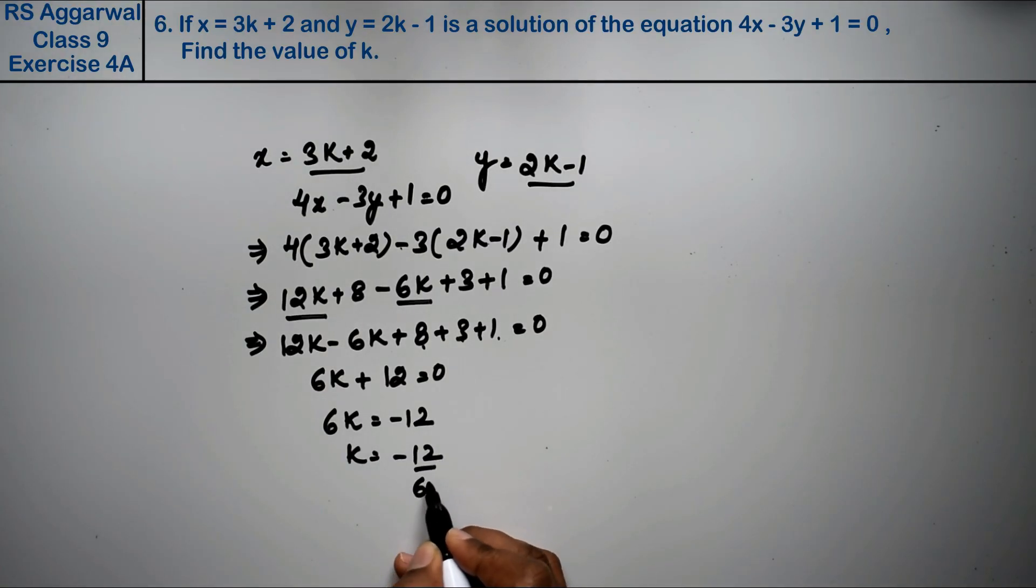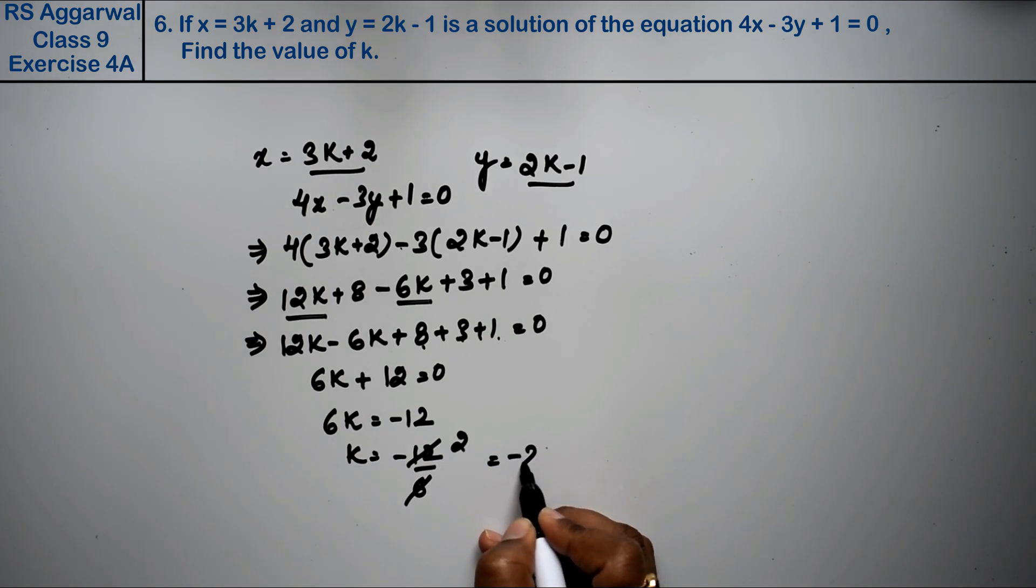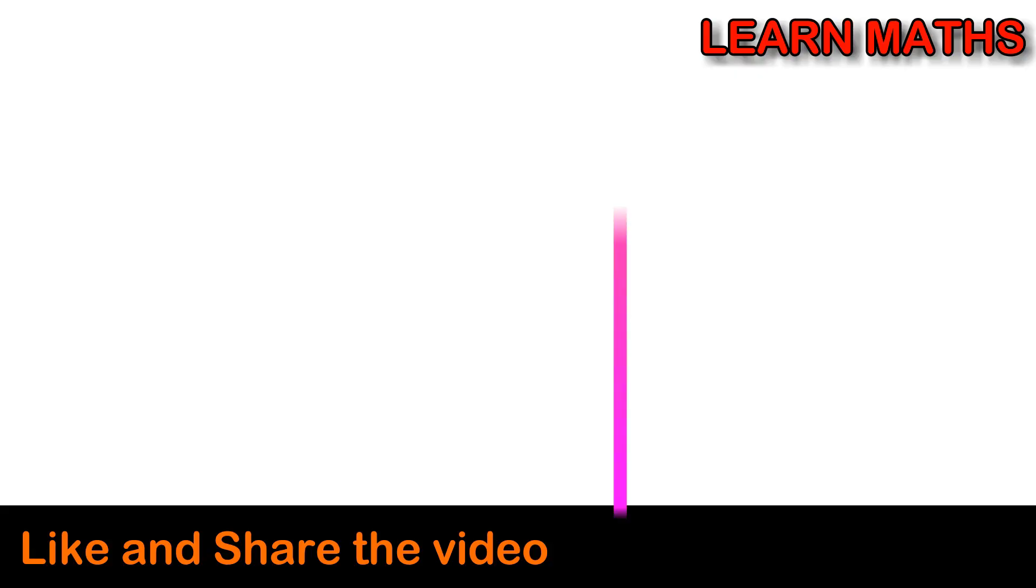So we get 6k equals minus 12. Therefore k equals minus 12 upon 6, which is minus 2. That is the answer.